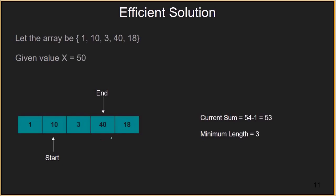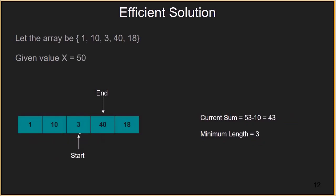As the sum of the current subarray has become greater than 50, we start removing elements from the start pointer. We move start to element 10; current sum becomes 53. As 53 is still greater than 50, we update minimum length to 3. We move start to element 3; current sum becomes 43. As the sum is now smaller than 50, minimum length remains unchanged. So to increase the sum, we move end to the next element, 18. Current sum becomes 61. Minimum length is already 3, so we do not update it.